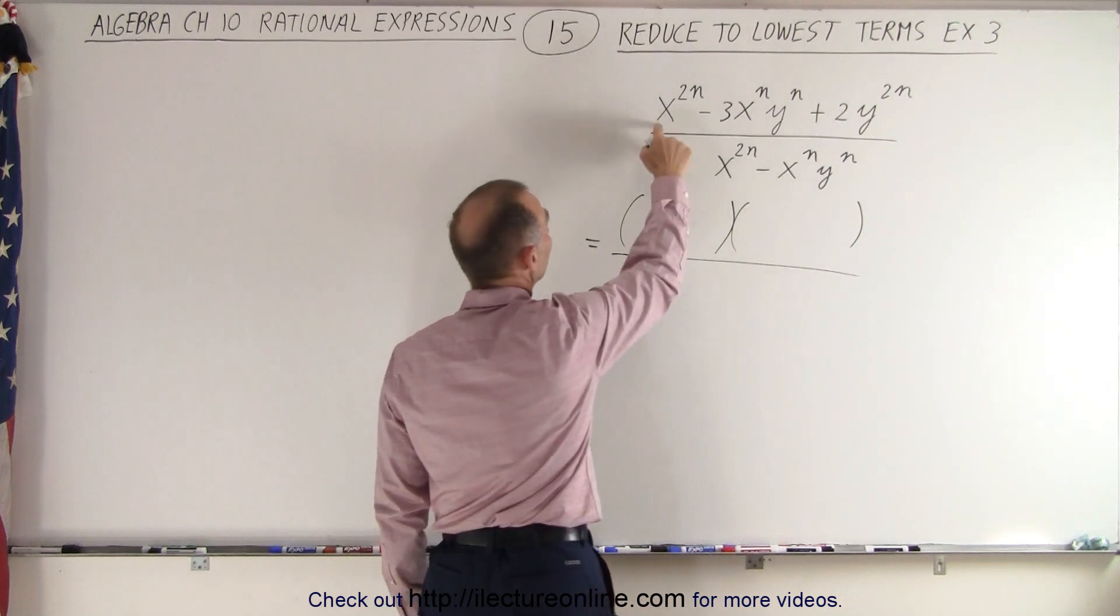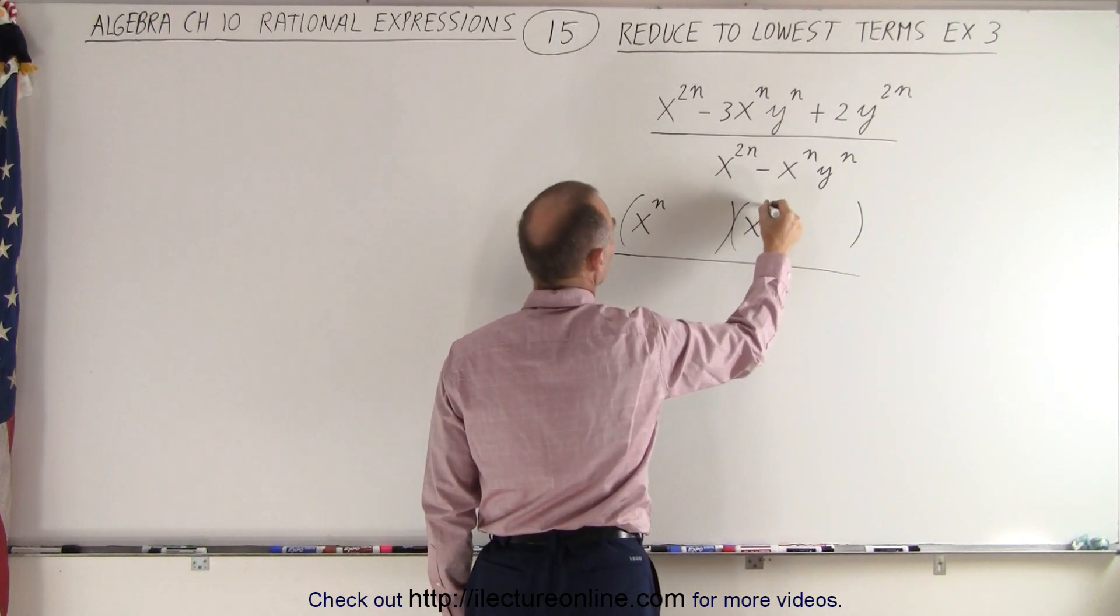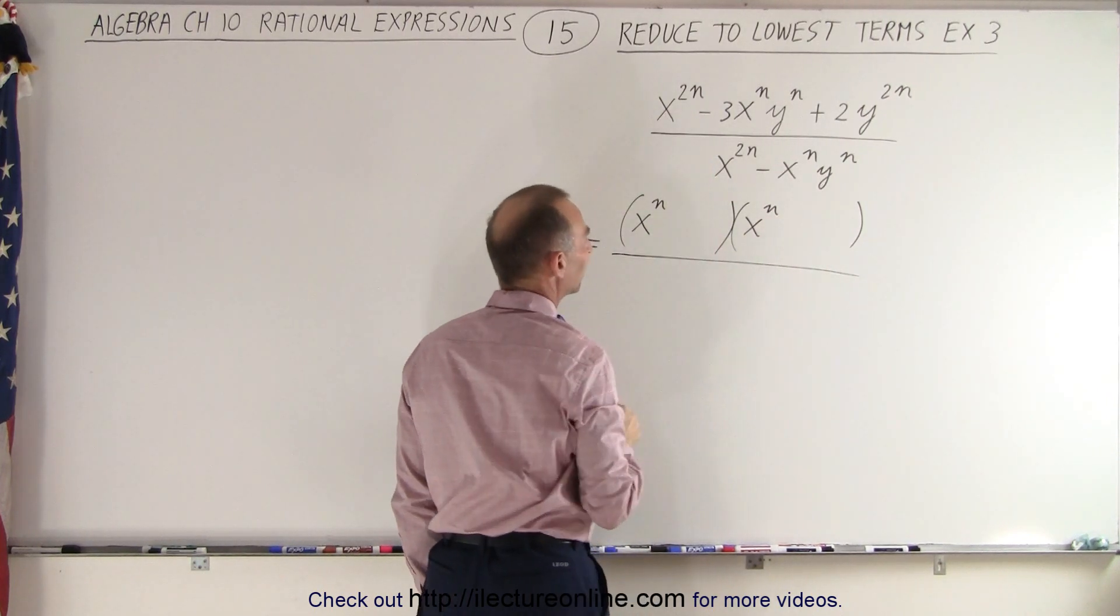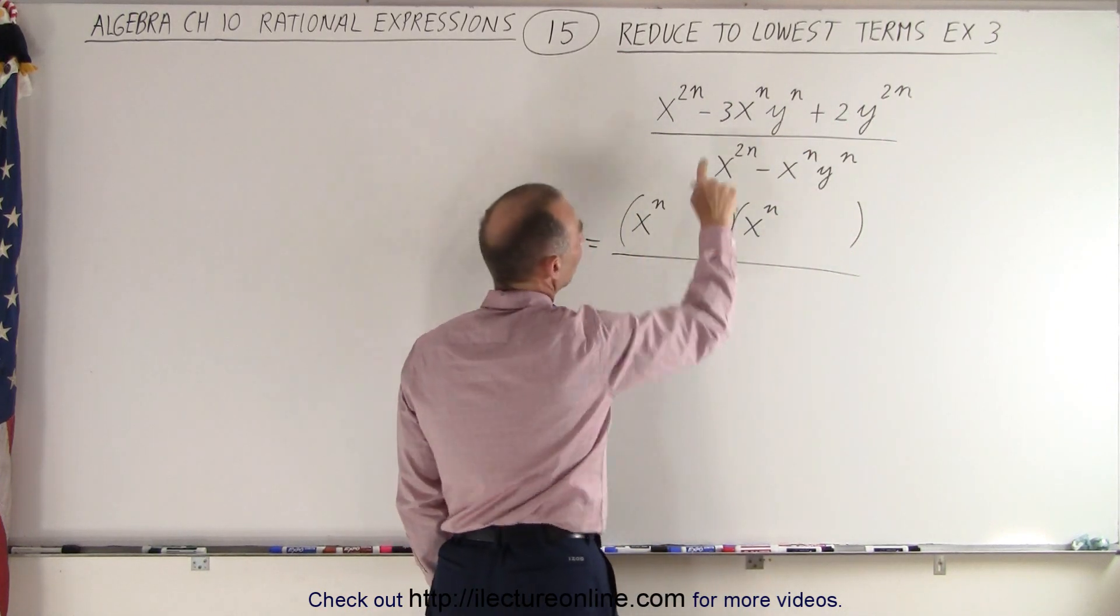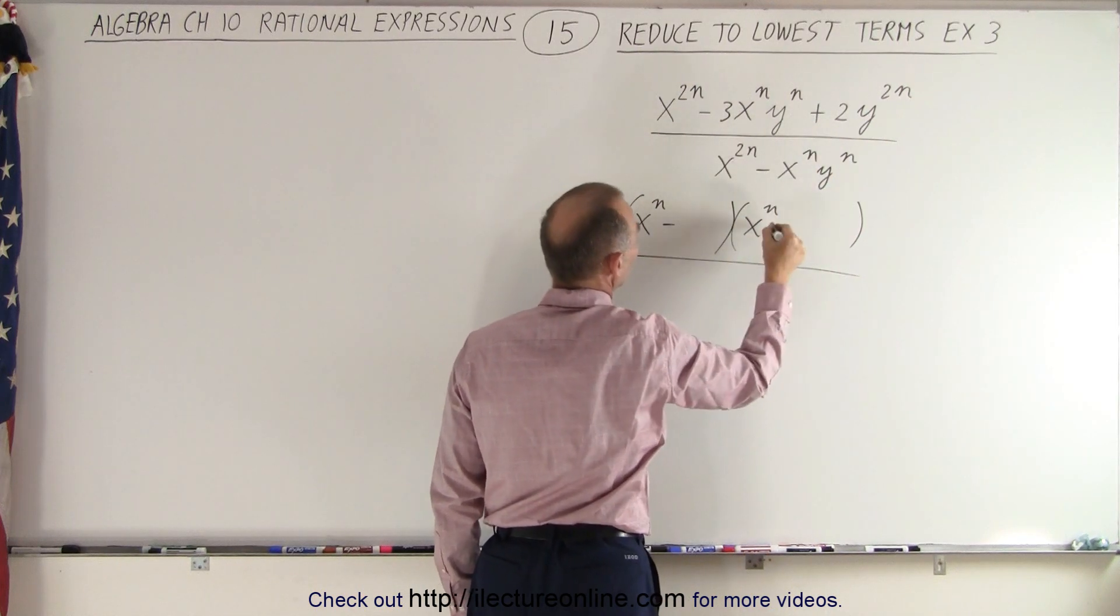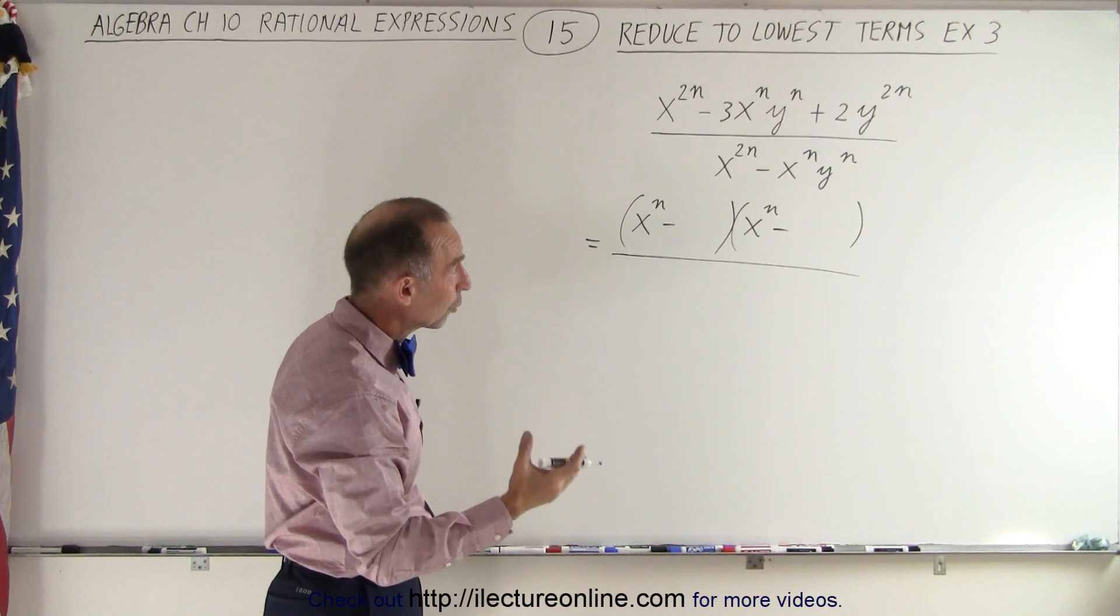So in the numerator to get x to the 2n, we're going to need x to the n and x to the n, because when I multiply these two together I get x to the 2n. In the back here we have 2y to the 2n. If I look at the signs, I have a negative here and a positive there, which means that I need two negative signs. Therefore, to get what's in the back there, the third term...